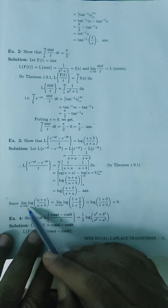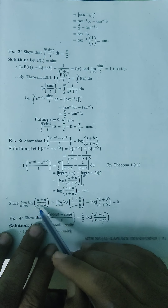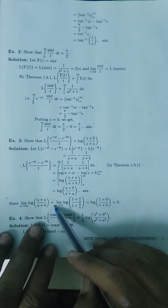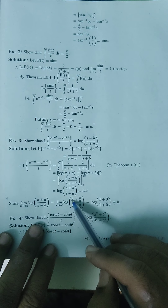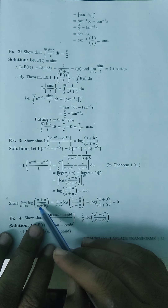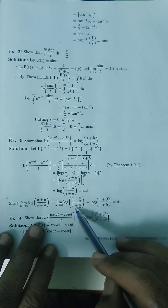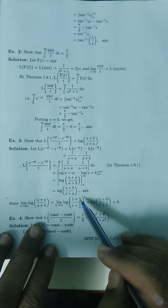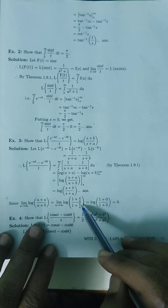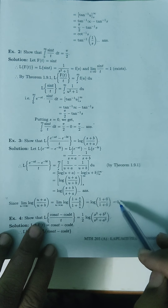Since the limit as u tends to infinity of log((u+a)/(u+b)): taking u outside the bracket, the u's cancel, giving log((1 + a/u)/(1 + b/u)). Taking the limit as u → ∞, a/u → 0 and b/u → 0, so we get log(1/1) = log(1) = 0. This confirms the upper limit contributes 0, validating our result.